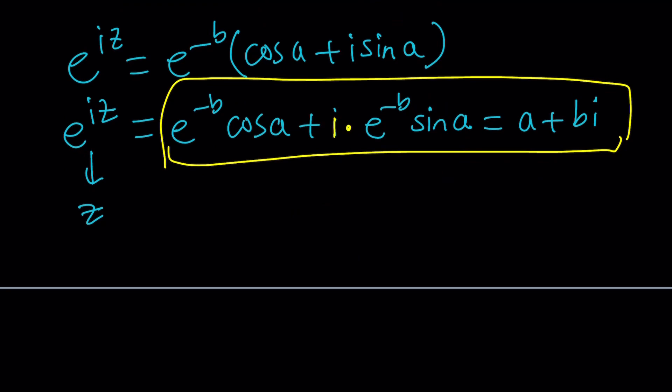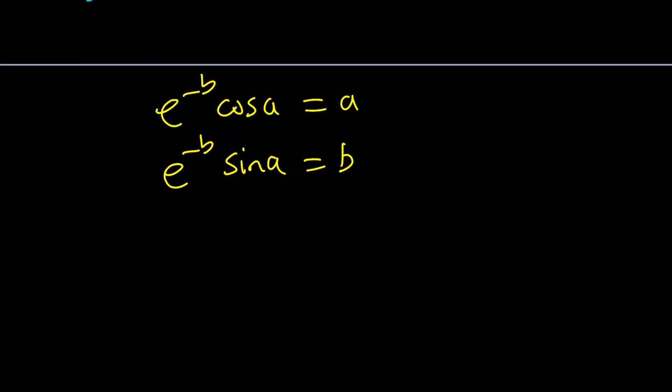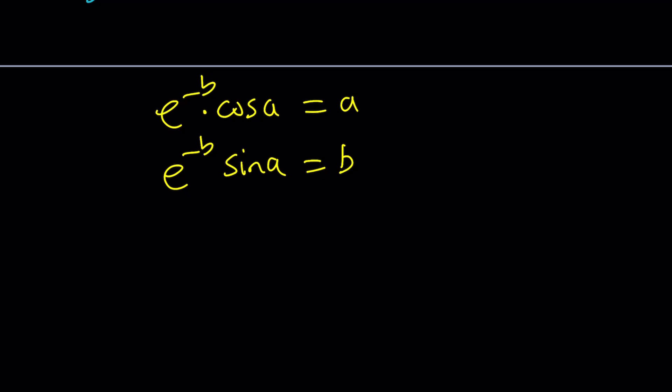If two complex numbers are equal, we have the real parts equal to real parts and imaginary parts equal imaginary parts. So this is going to equal a and this is going to equal b. So let's go ahead and write that as a system of equations. e to the power negative b cosine of a equals a, e to the power negative b sine of a equals b. That looks like an interesting equation. There is some sort of symmetry, maybe a little bit. But how do you solve something like this?